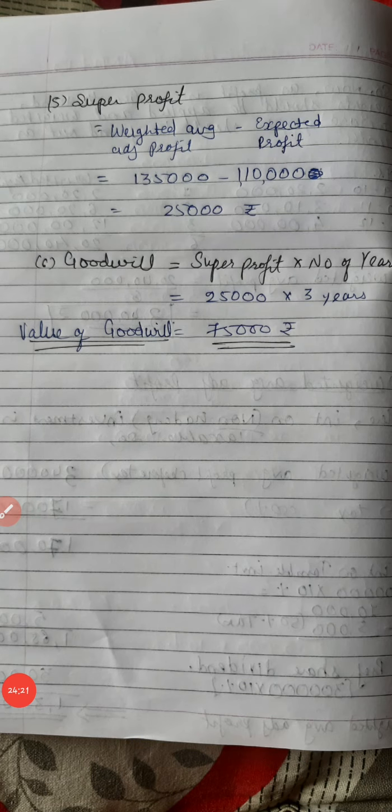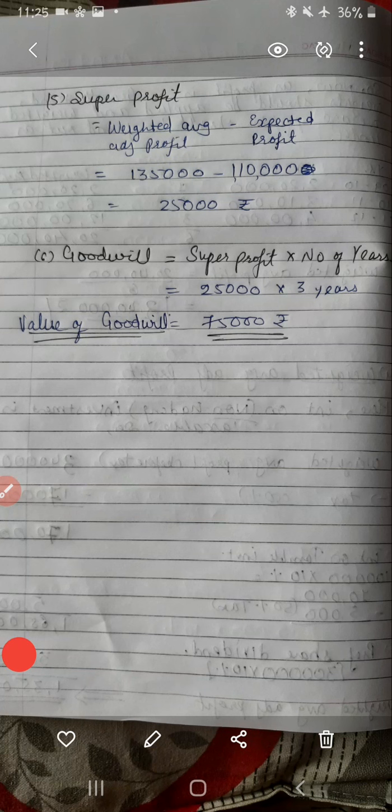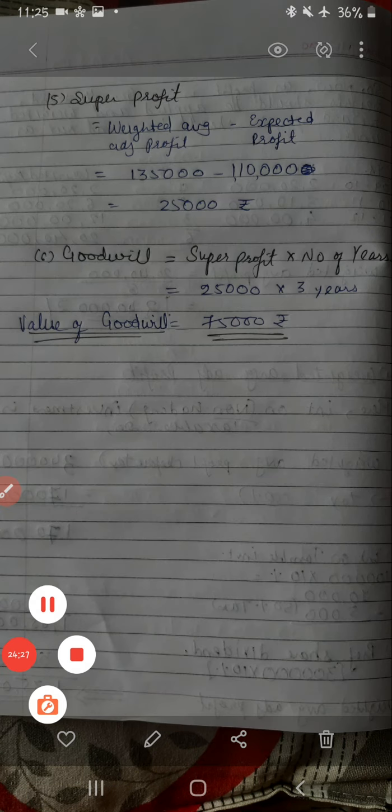Write: year, profit before tax, weights (1, 2, 3), and weighted profit. First year: 2,20,000 × 1 = 2,20,000. Second year: 3,10,000 × 2 = 6,20,000. Third year: 4,00,000 × 3 = 12,00,000. Total of weighted profits: 20,40,000. Weighted average profit = 20,40,000 divided by 6 (total of weights: 1+2+3) = 3,40,000.